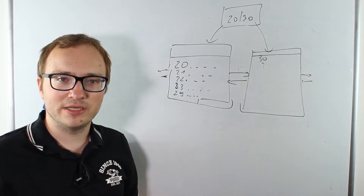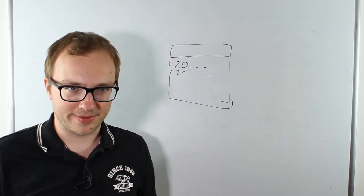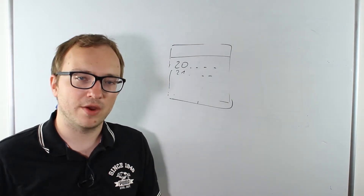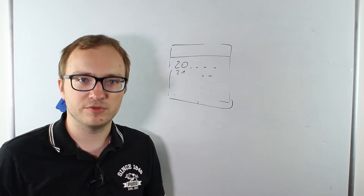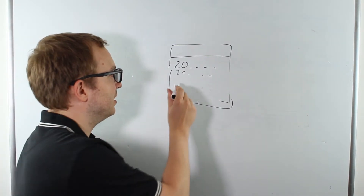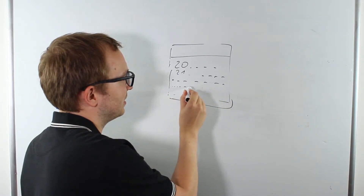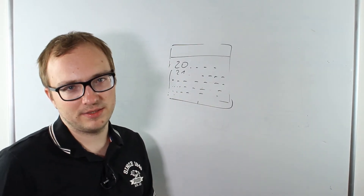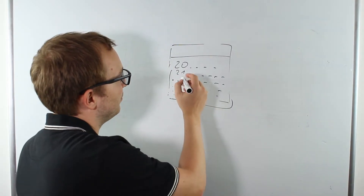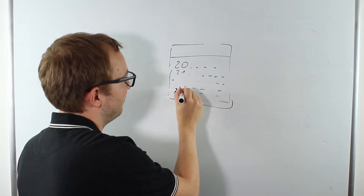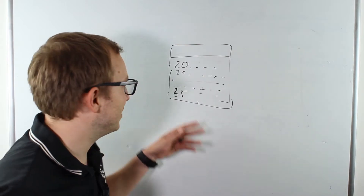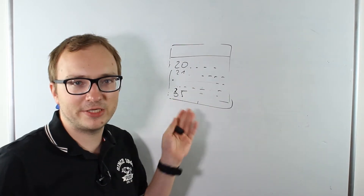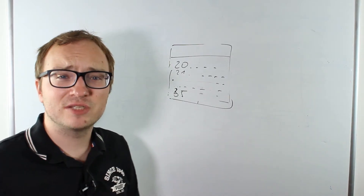Now the last scenario: a page split. A page split is the most interesting case. I won't give you the exact SQL Server algorithm — just a simplification that's good enough to understand what a page split is. Let's assume the value 21 has large variable-length data, so there's no room, and 30 is not exactly the successor of 21. For example, we have 20, 21, and 35, and we want to insert 30 right in between — but there's not enough space, so we can't just append it.